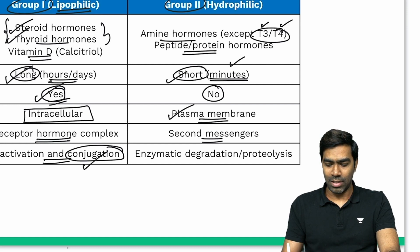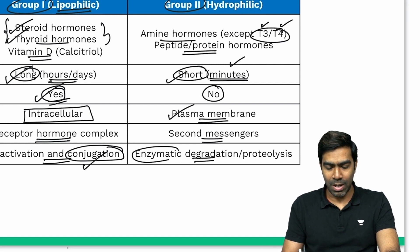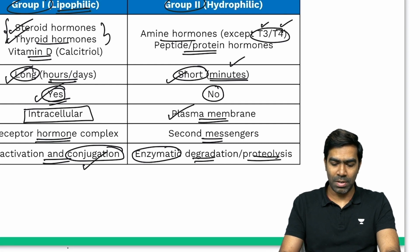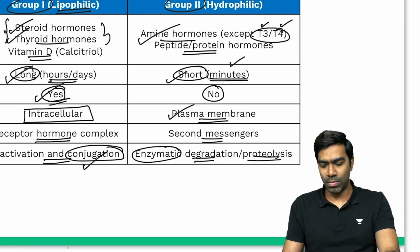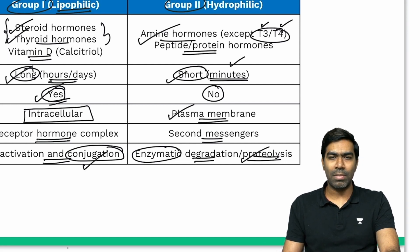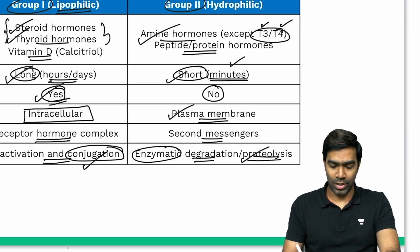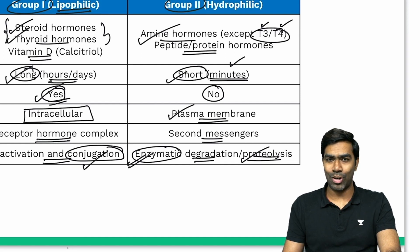Metabolism of hydrophilic hormones happens via enzymatic degradation or proteolysis. For amine-based hormones it's predominantly enzymatic degradation; for peptide or protein-based hormones it's proteolysis. For example, catecholamines are metabolized by monoamine oxidase (MAO) and COMT — catechol-O-methyltransferase — which is enzymatic degradation.